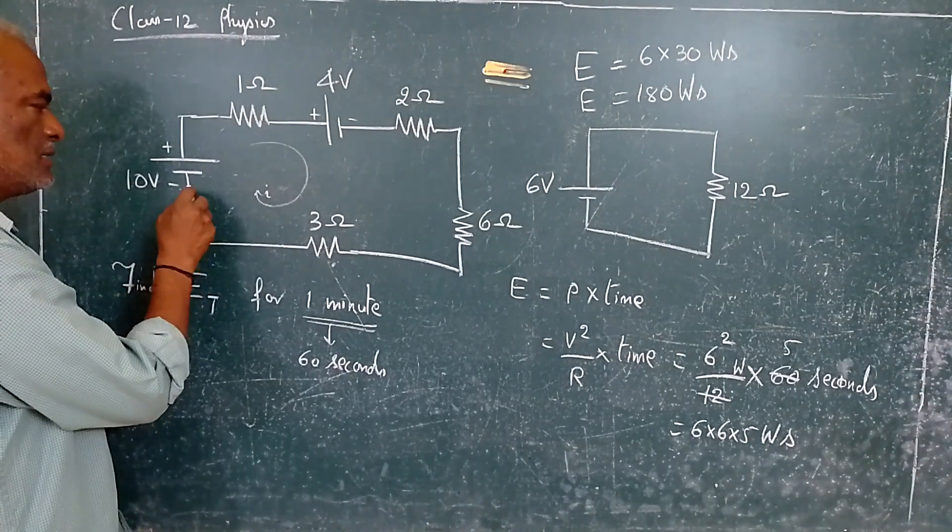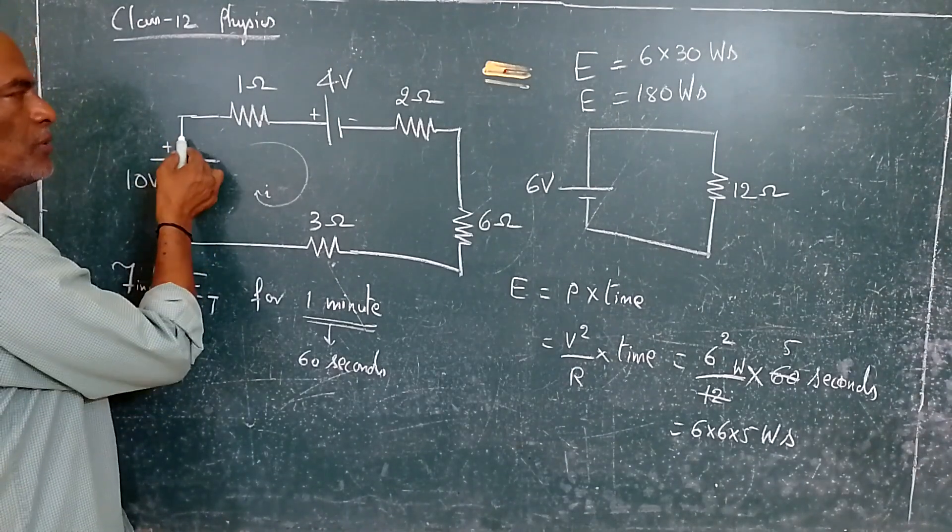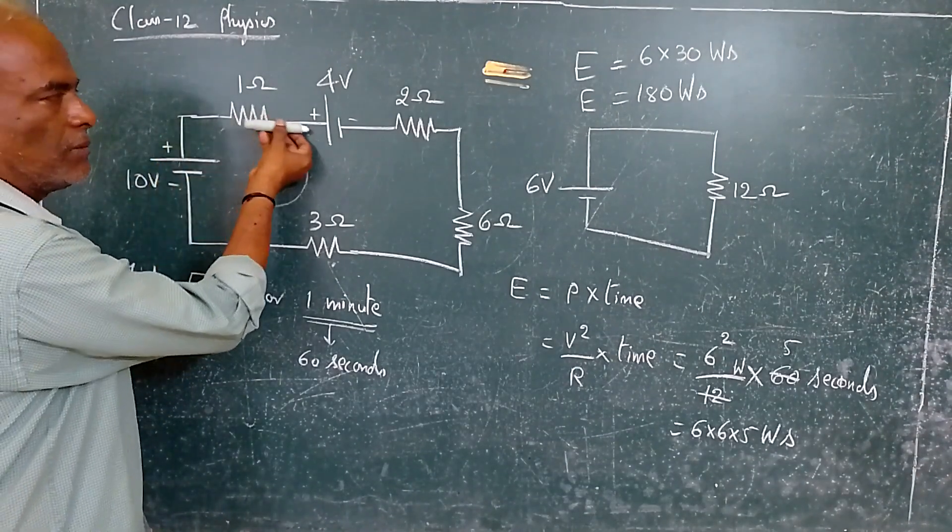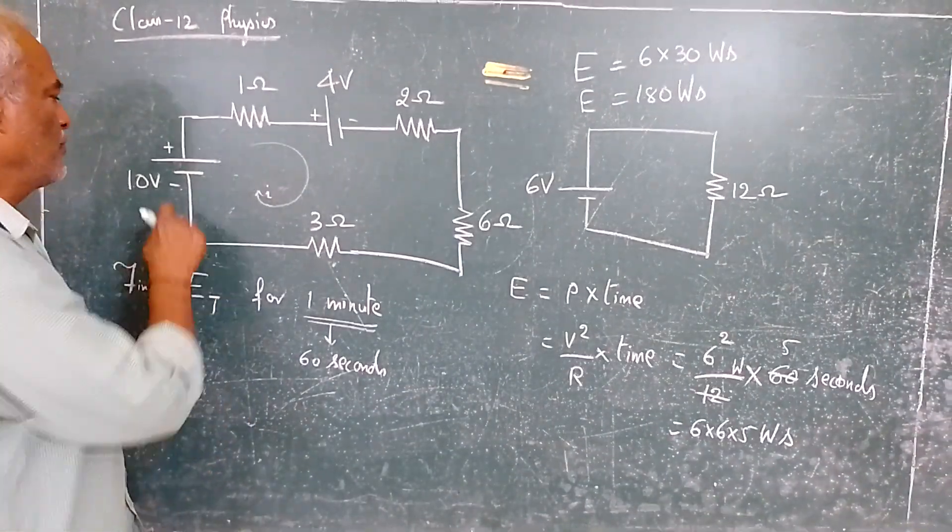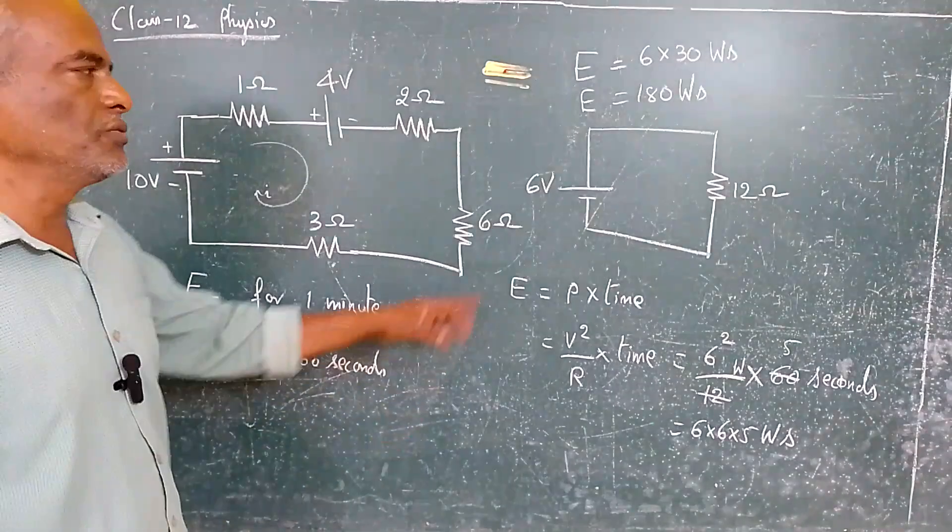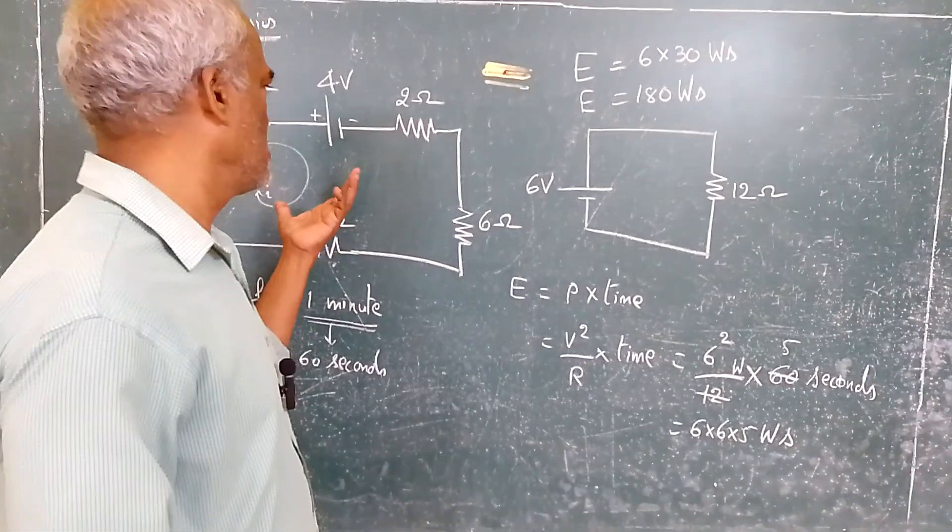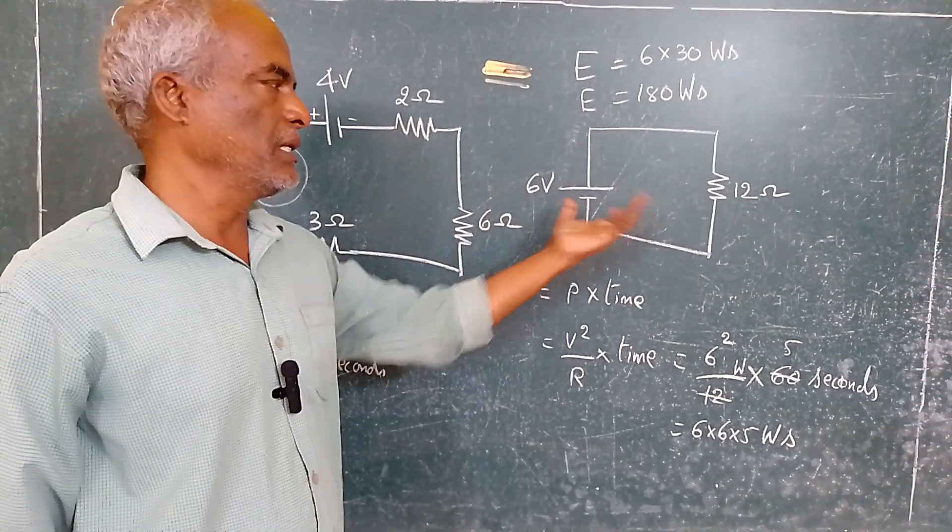So this sees a rise in potential, where when it comes to the second DC source, it sees a fall in potential. Therefore 10 minus 4 will give you 6 volts. So the equivalent circuit for this one will be like this.